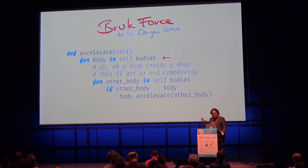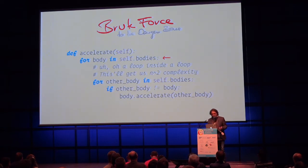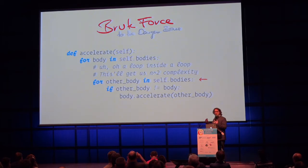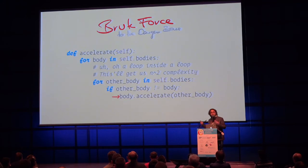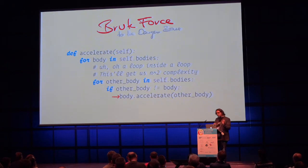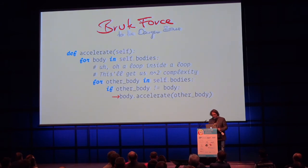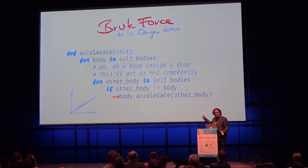The naive solution to the n-body problem in Python is simple: we loop through all our bodies, and inside that loop we loop through all the other bodies and apply the Newtonian acceleration function to those two bodies — this body's motion vector is influenced by this body's mass from that distance. Of course, as our number of bodies grows, this gets very computationally intensive.